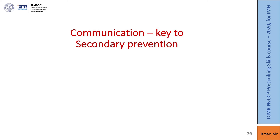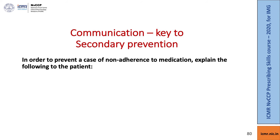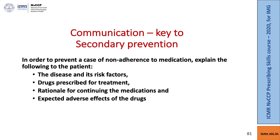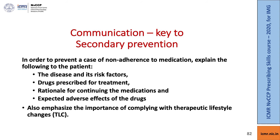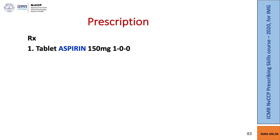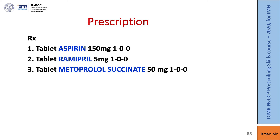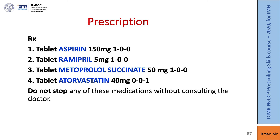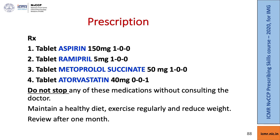How are we going to manage this patient? Communication is the key to secondary prevention. In order to prevent non-adherence to medication, we need to explain the following: tell them about the disease and its risk factors, explain what these drugs are and why they're given, the rationale for continuing the medications, and possible adverse effects. We need to also emphasize the importance of complying with therapeutic lifestyle changes. The prescription for this patient is: aspirin 150 mg — note this dose is higher — ramipril 5 mg, metoprolol 50 mg, atorvastatin 40 mg. Tell them these medications should not be stopped without consulting the doctor. They need to maintain a healthy diet, exercise regularly, and reduce weight, with a review after one month.